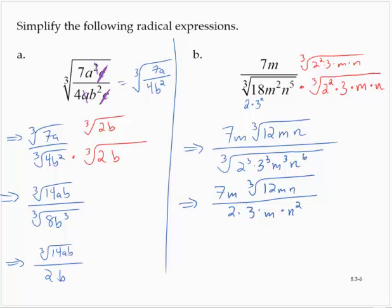I see a common factor between the numerator and denominator, remove it. 7 times the cube root of 12mn over 6n squared.